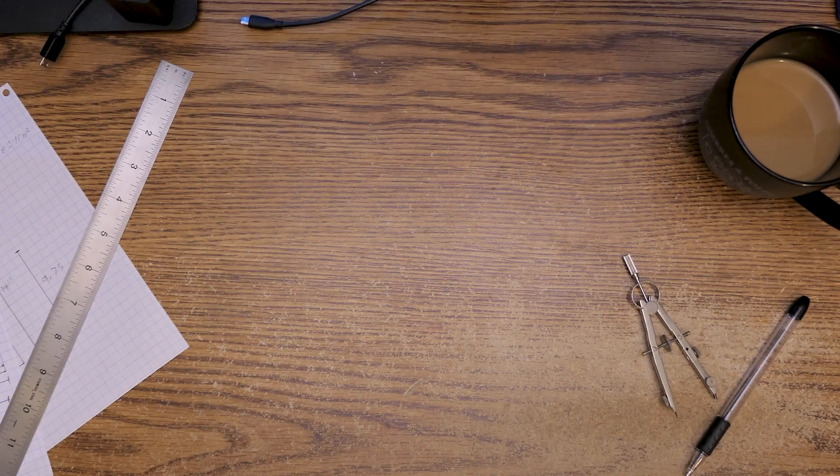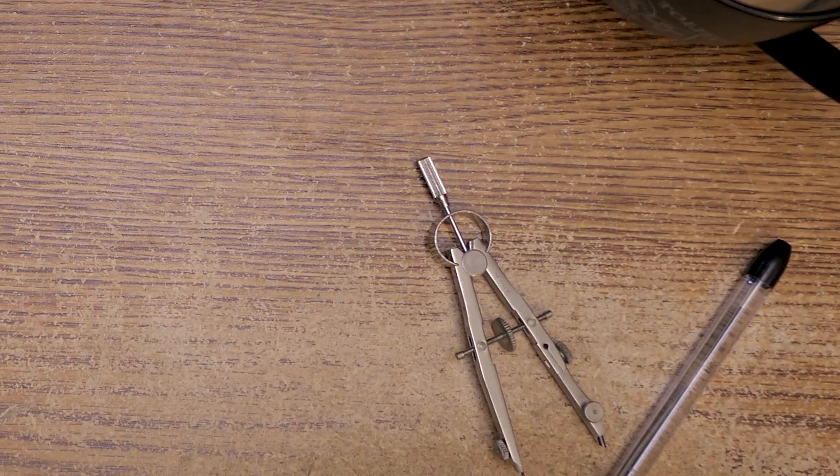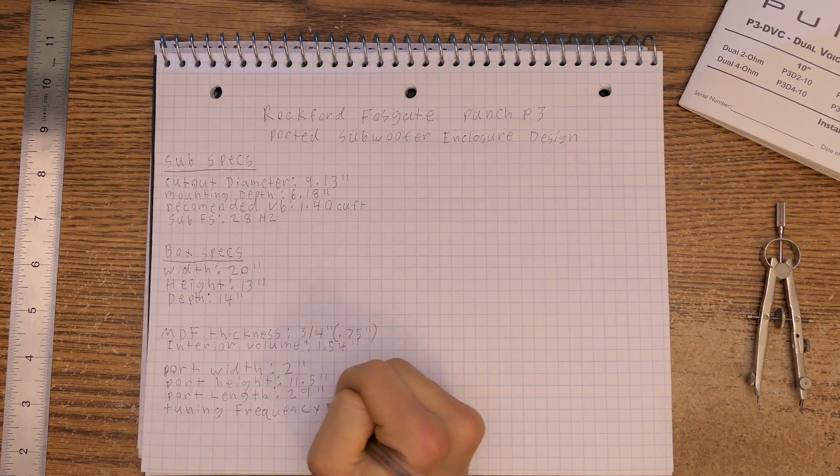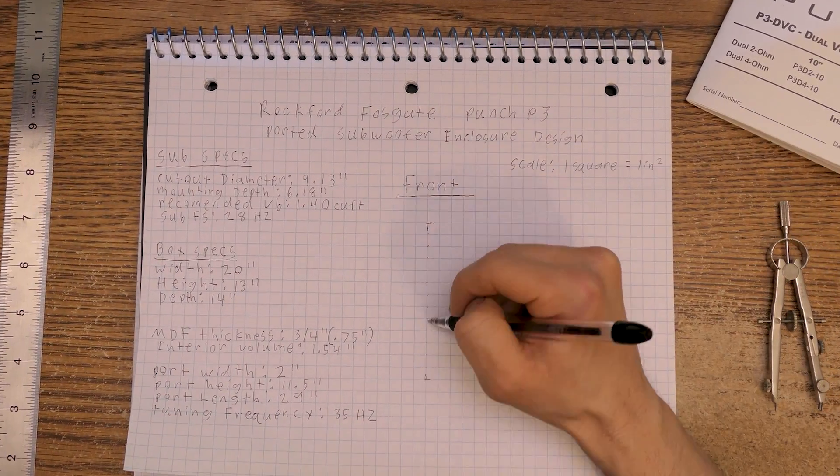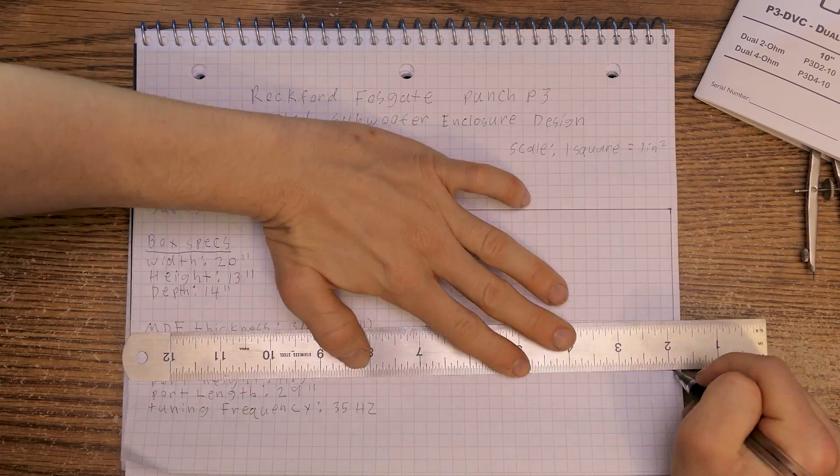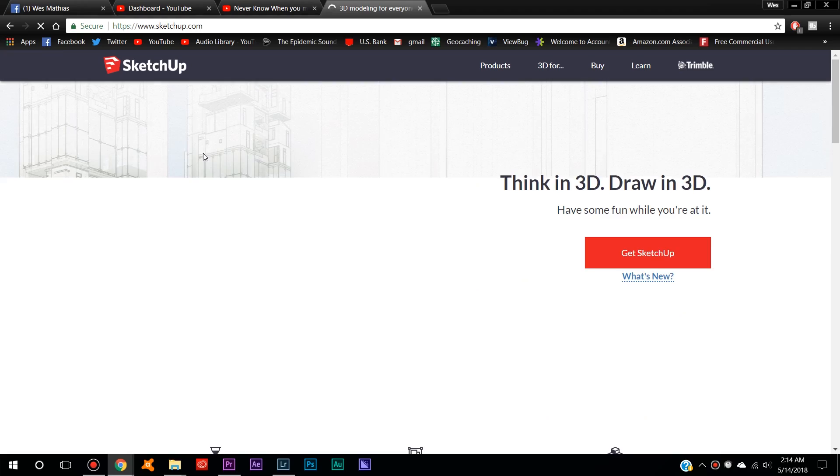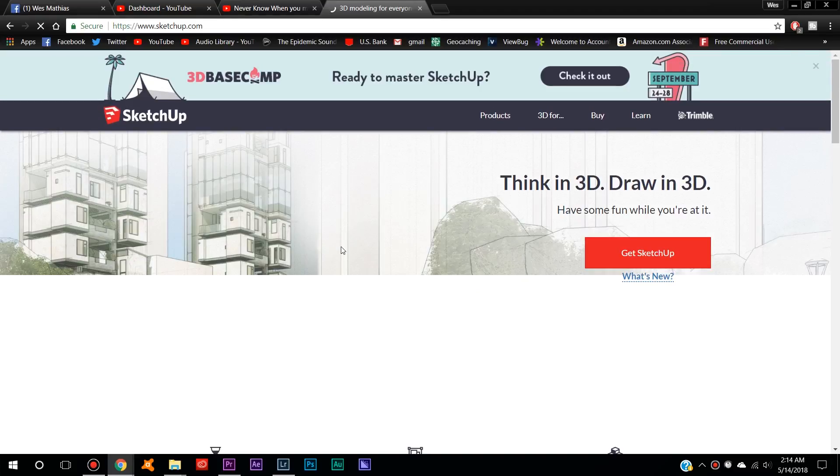I'm going to be designing this with graph paper, a ruler, a compass, and a pen. I would recommend using a pencil in case you mess up, but I'm just using a pen so you can see better. There are also many other ways you can design this, but this is just how I usually do it. Let me know if you would like me to make a tutorial on how to do this on Google SketchUp.